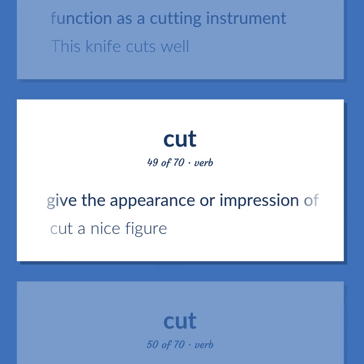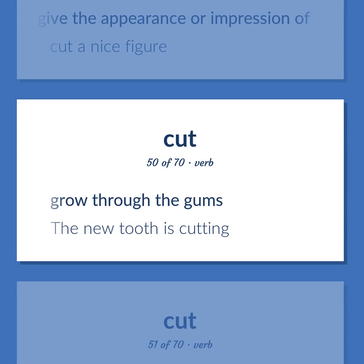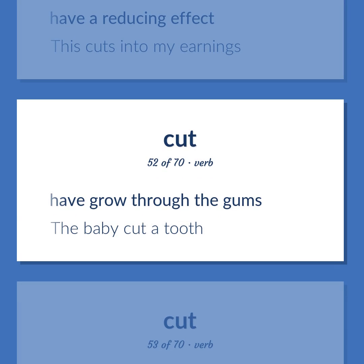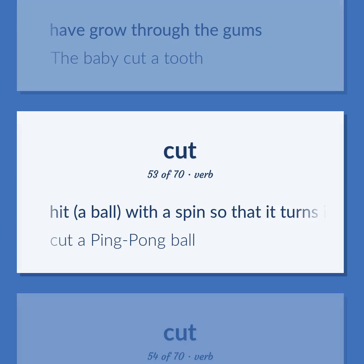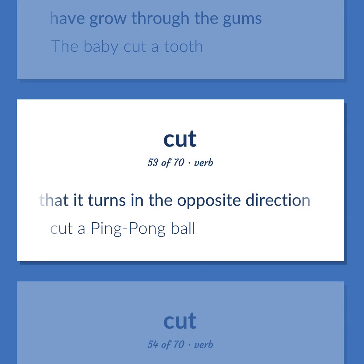Cut (verb): Give the appearance or impression of — cut a nice figure. Grow through the gums — the new tooth is cutting. Have a reducing effect — this cuts into my earnings. Have grow through the gums — the baby cut a tooth. Hit a ball with a spin so that it turns in the opposite direction — cut a ping pong ball.